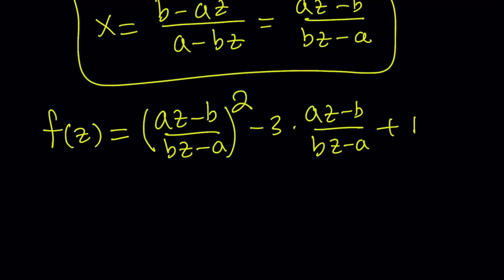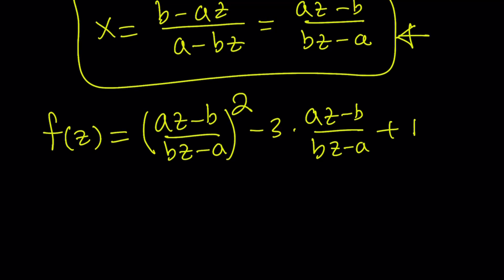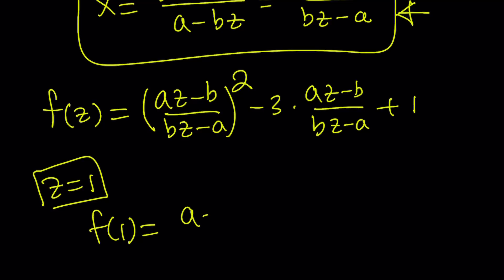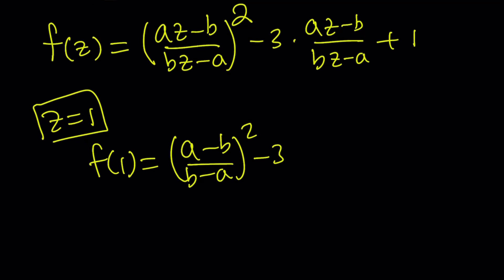Let's find f of 1 and f of negative 1 from here, because we have an expression for f of z. At this point, if you replace z with x you get f of x, but that doesn't matter — these are just dummy variables; you use them and throw them away. Let's go ahead and find f of 1: replace z with 1. That gives f of 1 equals a minus b divided by b minus a, quantity squared, minus three times a minus b divided by b minus a, plus one.